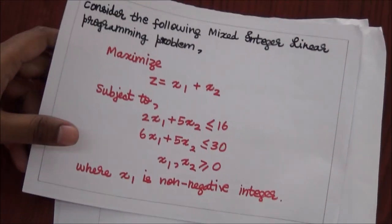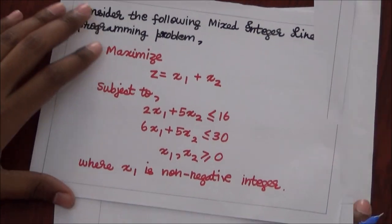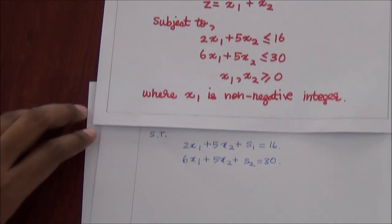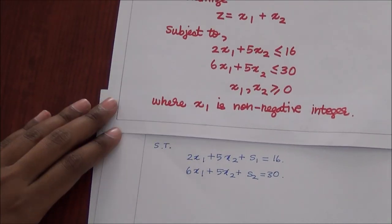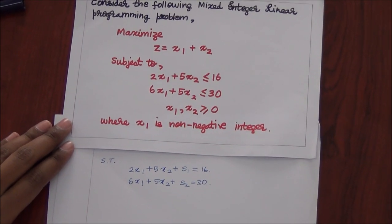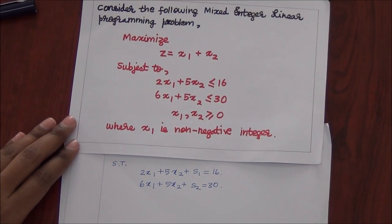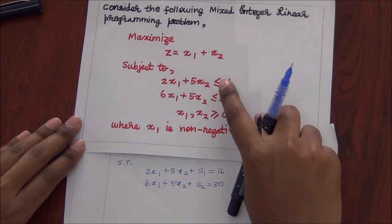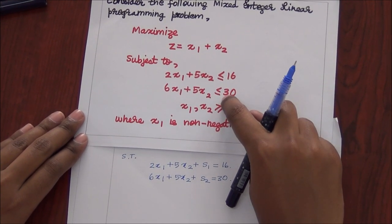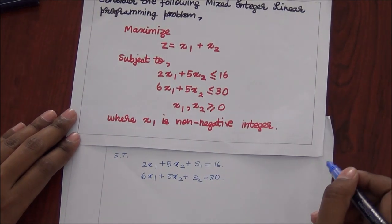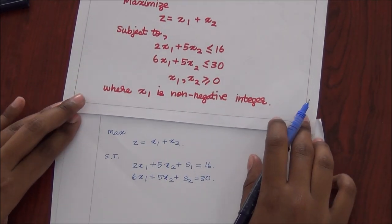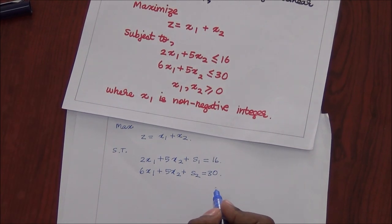In order to solve the given problem using the simplex method, we will first rewrite the given equations by introducing slack variables and surplus variables wherever necessary. As we see in the constraints that we have less-than-or-equal-to symbols, we will introduce slack variables. Thus, rewriting the equations, we obtain the following equations.